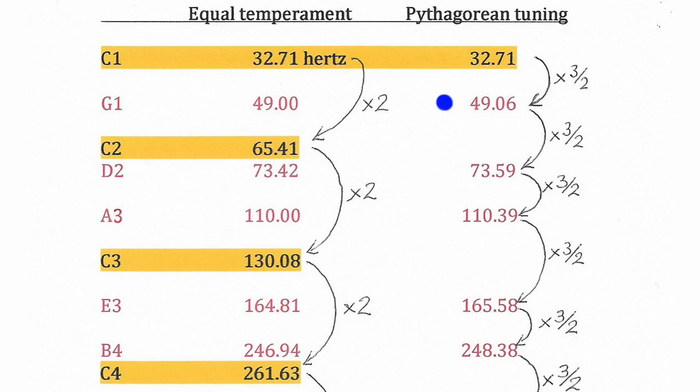Pythagorean tuning, by contrast, is entirely based on fifths, which means jumping by 3 over 2, or 1.5 in frequency, time after time, starting from some initial note, which in this case we're taking to be C1. You can see that even after the very first jump to the G1, we're already a little bit different than the equal temperament for the G1. And the discrepancy between the frequency of notes in equal temperament and Pythagorean tuning gets wider as we go up.